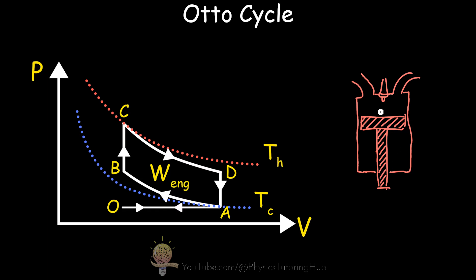This is a crude representation of a gasoline engine, or the chamber within a gasoline engine. We've got the intake valve and the exhaust valve. For a perfect gasoline engine, it would have a thermodynamic cycle that looks like this, where we have two adiabatic processes at the top and bottom and two isochoric or isovolumetric processes.